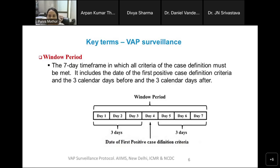The window period is a seven-day time frame in which all the criteria of the case definition must be met. It includes the date of the first positive case-defining criteria and the three calendar days before and three calendar days after. What is different from the BSI and UTI module is that for VAP surveillance, we build the window period around the first positive case-defining criteria, not necessarily around the first positive diagnostic test.